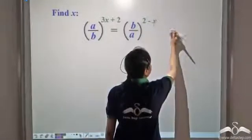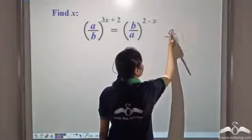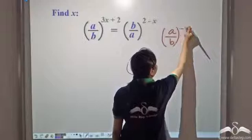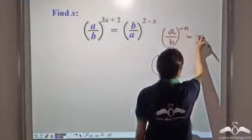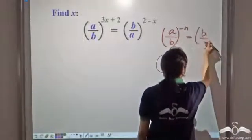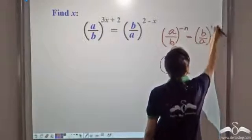We have learnt that a by b to the power negative n is equal to b by a to the power n.